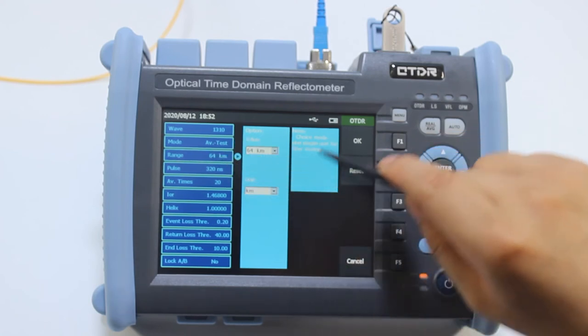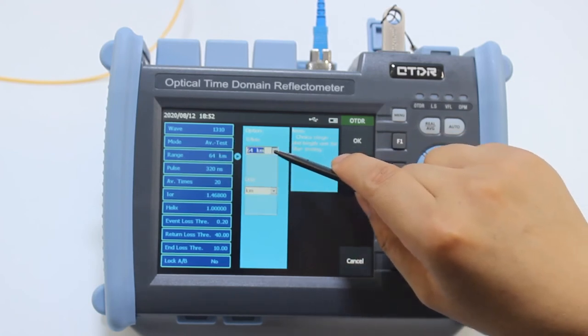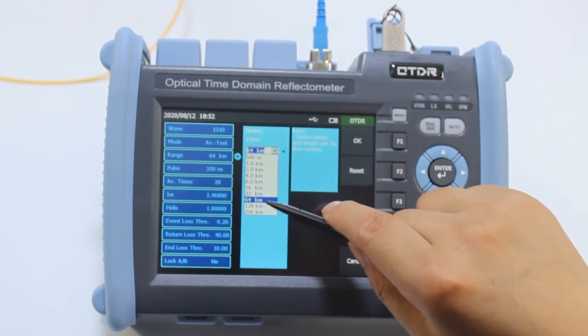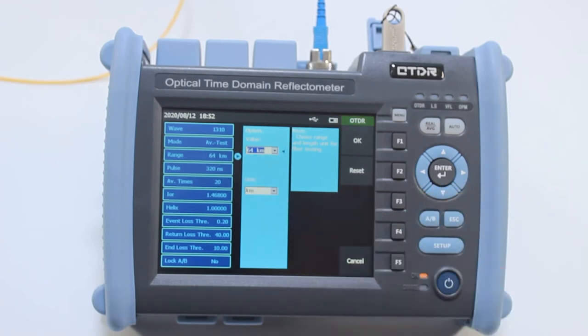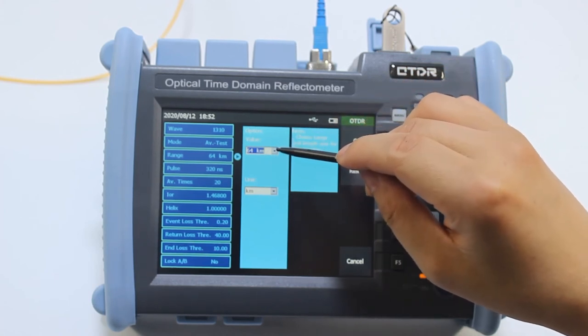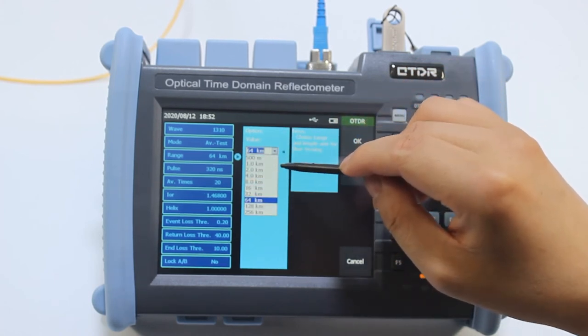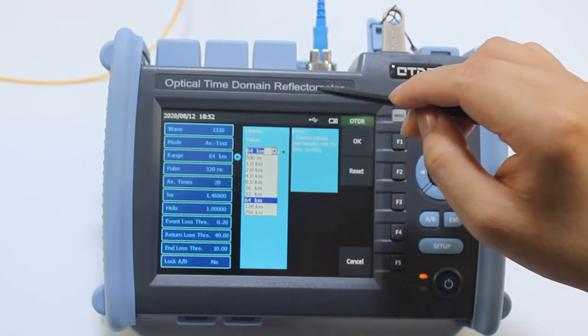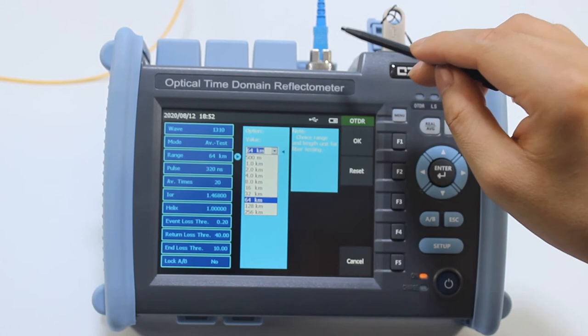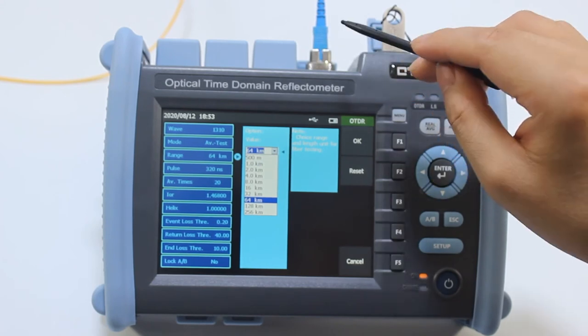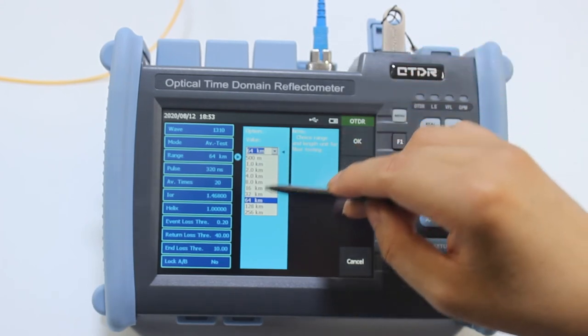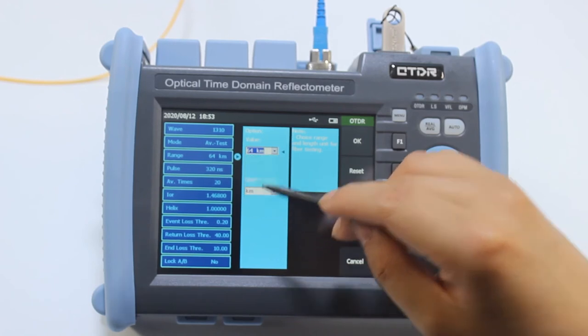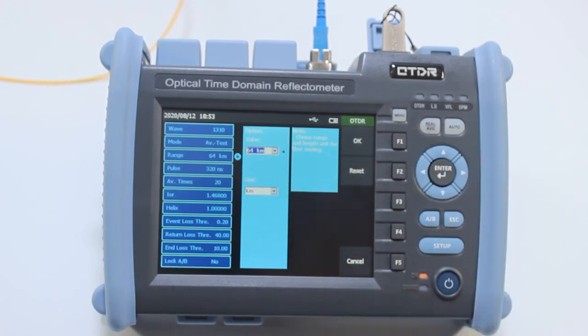For range, we select 64 kilometers. This value is two times of the fiber lengths. We have two spools, one is 10 kilometers and the other is 20 kilometers. So we select 64, around two times of 30 kilometers.